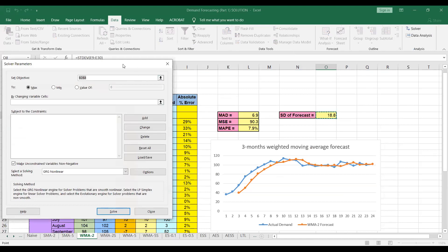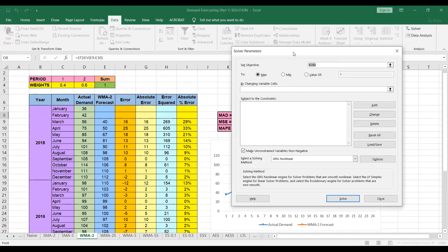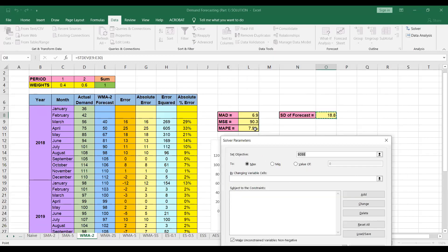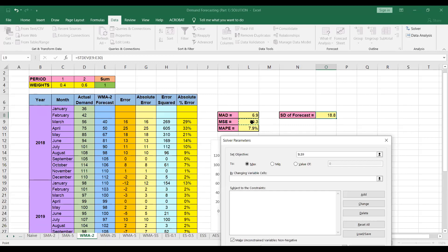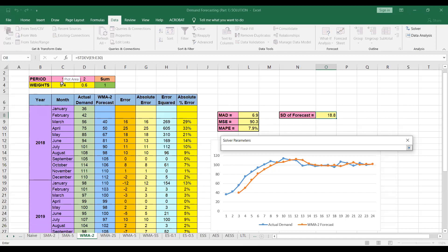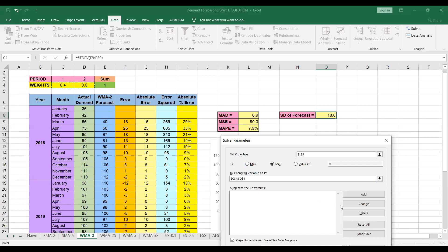And here, I select the objective cell, that is the cell containing MSE. So that is in my case, cell L9. And I want to minimize this error and my decision variables are these two cells having weights 0.4 and 0.6. I select those. Then I have to specify the constraints.